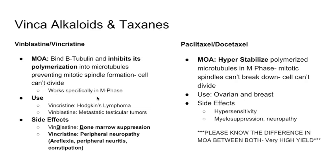These drugs work specifically in the M phase — a high-yield point, since exam questions will ask which phase of the cell cycle they work in. Vincristine can be used for Hodgkin's lymphoma; vinblastine is used for metastatic testicular tumors, though these uses are lower yield. Side effects are high yield: vinblastine blasts the bone marrow, so it causes bone marrow suppression.